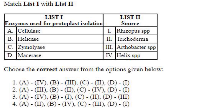Enzymes used for protoplast isolation and their source: Cellulase is obtained from Trichoderma, A2. A2 is there only in option 4, so 4 must be the answer. Helicase from Helix species, B4. Zymolase from Arthobacter species, C3. And macerase is from Rhizopus species, D1. So answer is option 4: A2, B4, C3 and D1.